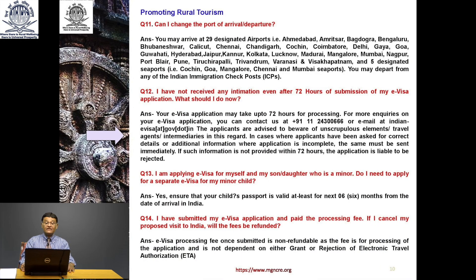Can I change the port of arrival and departure? You may arrive at 29 designated airports: Ahmedabad, Amritsar, Bagdogra, Bengaluru, Bhubaneswar, Calicut, Chennai, Chandigarh, Kochi, Coimbatore, Delhi, Gaya, Goa, Guwahati, Hyderabad, Jaipur, Kannur, Kolkata, Lucknow, Madurai, Bangalore, Mumbai, Nagpur, Port Blair, Pune, Tiruchirapalli, Thiruvananthapuram, Varanasi, and Visakhapatnam. There are also five designated seaports: Kochi, Goa, Mangalore, Chennai and Mumbai seaports. You may depart from Indian immigration check posts (ICPs).